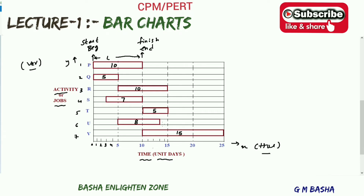Activity P and Q can start simultaneously at time 0. Both activities are independent of each other. However, activity Q is completed much earlier than activity P — activity P takes up to 10 days while activity Q is completed within 5 days, even though both started at the same time.